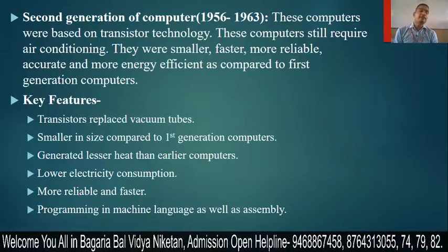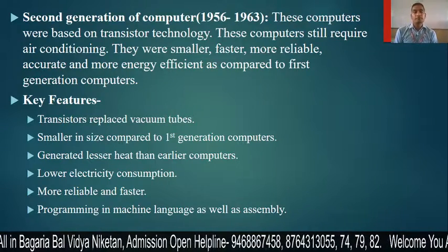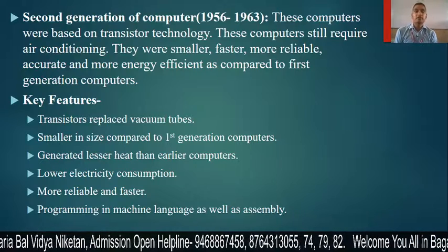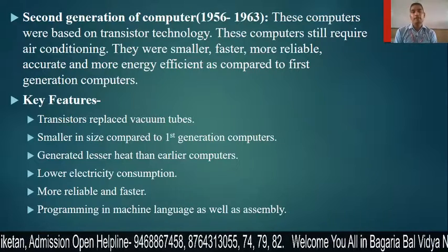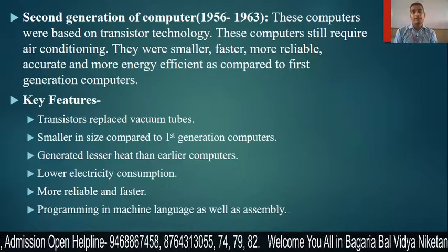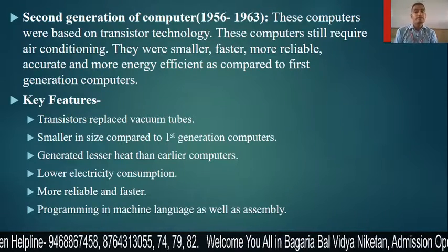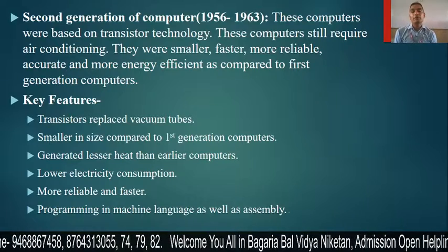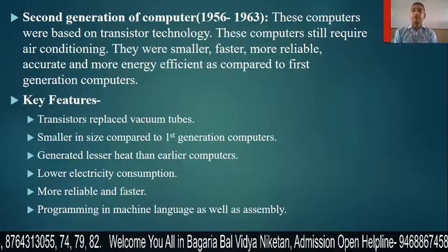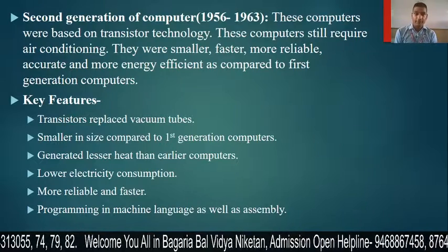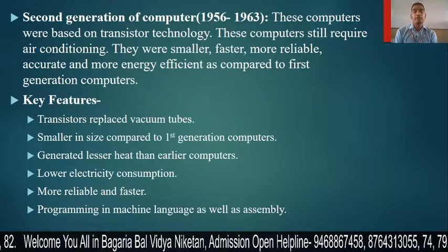Next is the second generation. Second generation computers were based on transistor technology, approximately from 1956 to 1963. These computers still required an air conditioner, but they were smaller, faster, more reliable, accurate, and more energy efficient compared to first generation computers.